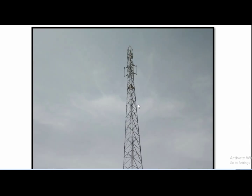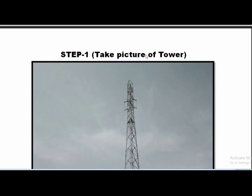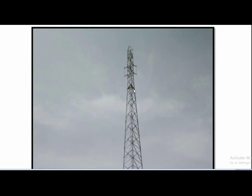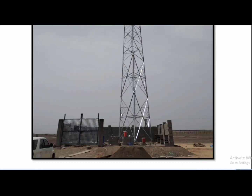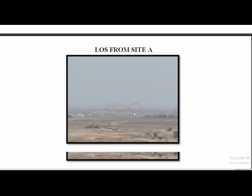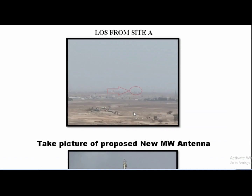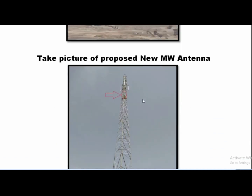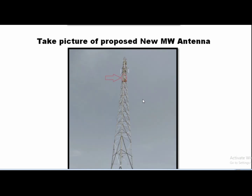Next, take a complete picture of the tower from top to bottom so that the tower legs are clearly visible. Then take the picture from site A looking toward site B, and also propose the microwave antenna height based on this observation.